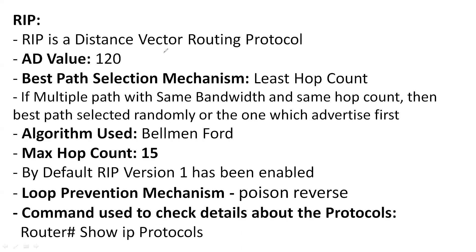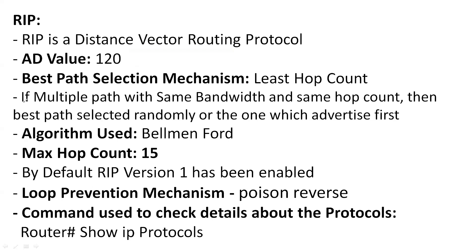The Routing Information Protocol is a distance vector routing protocol. The administrative distance (AD) value of RIP is 120. The lower the administrative distance, the more trustworthy the protocol — but in RIP, the AD value is the highest among common routing protocols. The best path selection mechanism uses the least hop count.